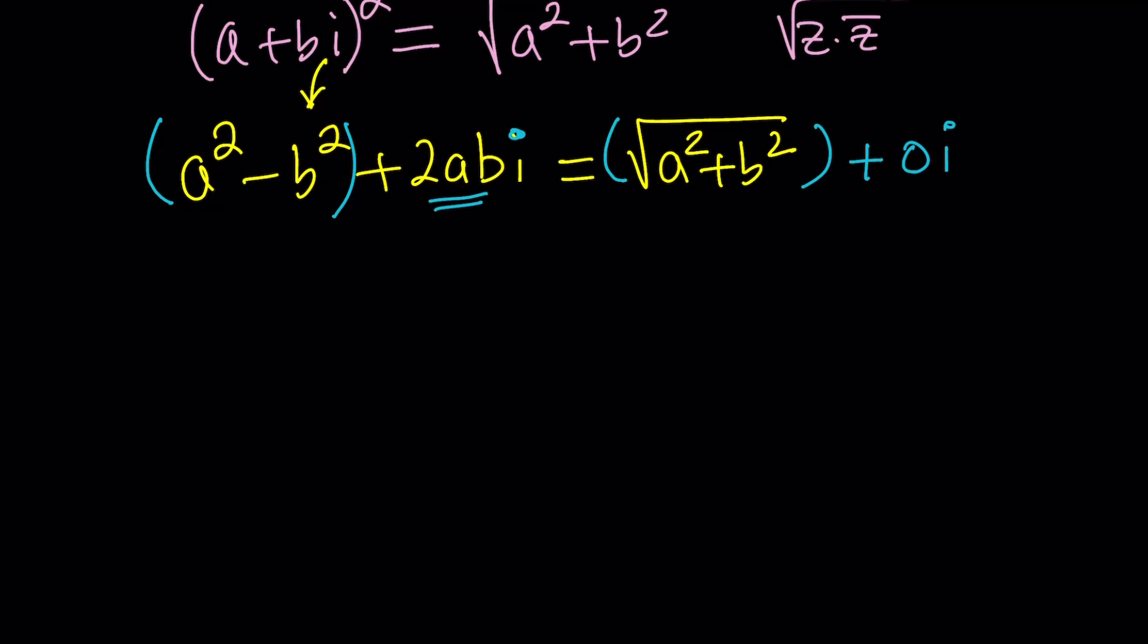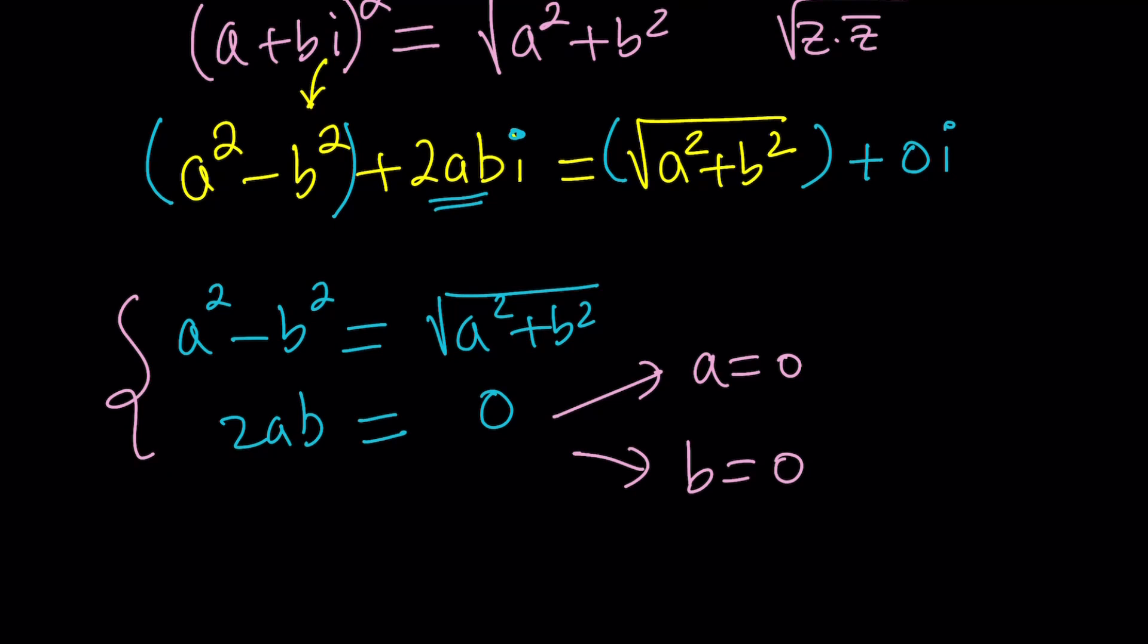So I'm just going to add a zero i because you can always add that when there is no i in the equation. Now we can compare the real parts with real parts and the imaginary parts with imaginary parts. Come up with a system and then solve that system. Find a and b. Those are going to give us the values of z. Let's see how many solutions are there. Let's go ahead and write down our system. A squared minus b squared is equal to square root of a squared plus b squared. That's my first equation. My second equation is actually awesome because that's 2ab equals zero. But doesn't that mean ab equals zero?